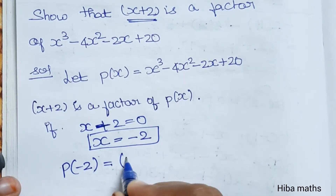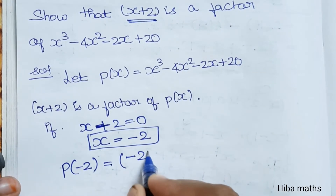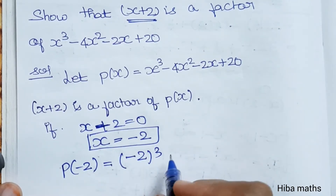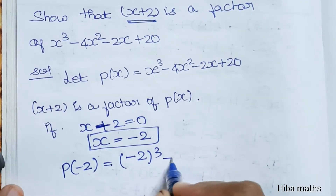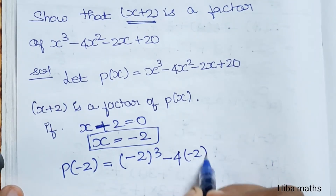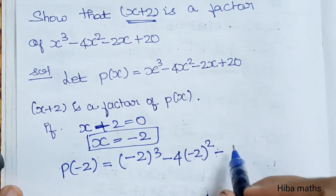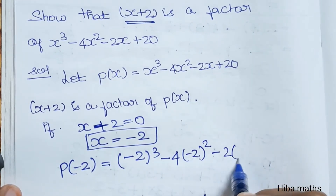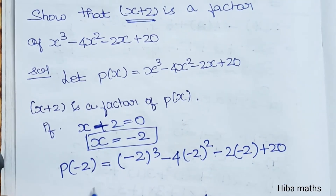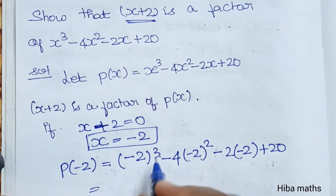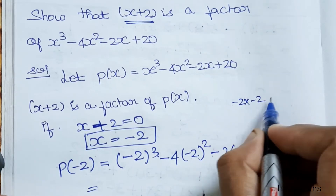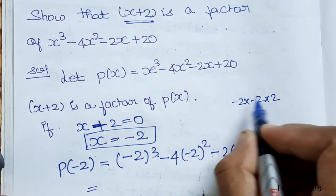p of minus 2 equals: x equals minus 2 cubed, minus 4 times x equals minus 2 squared, minus 2 times x equals minus 2, plus 20.